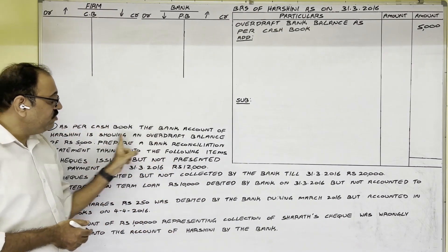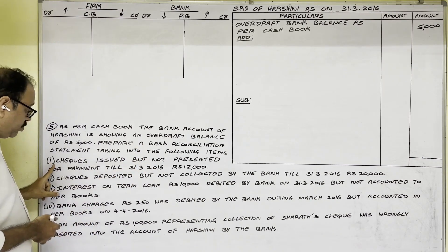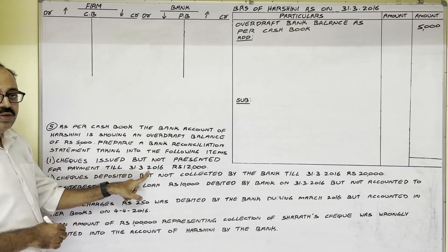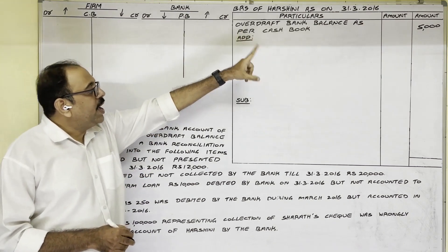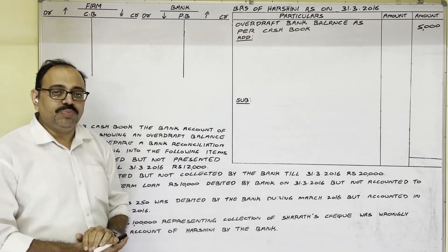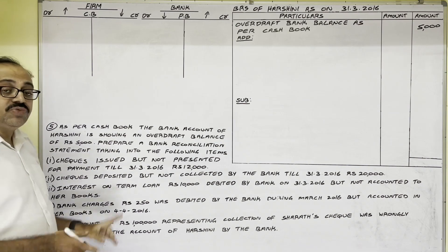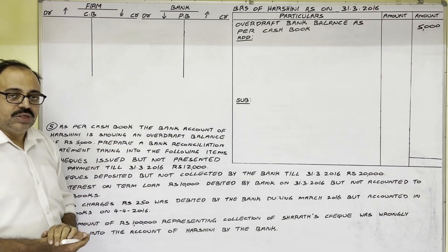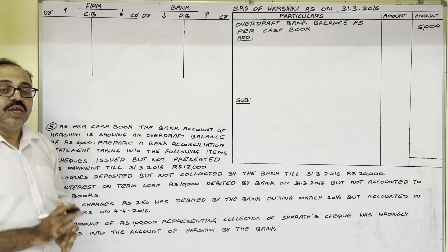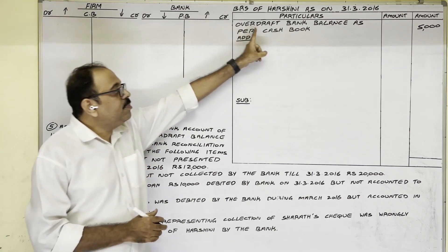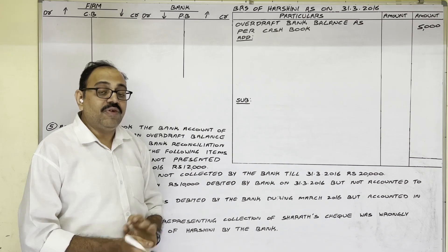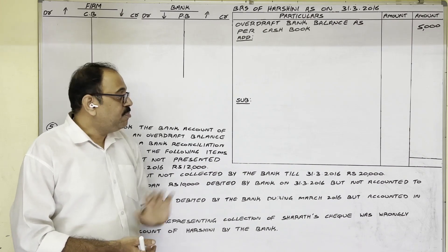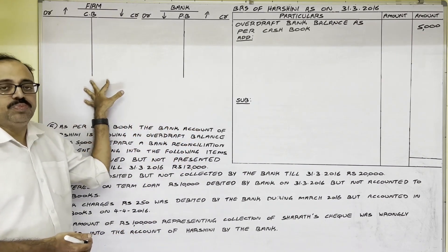The date is given in the first point. Overdraft bank balance as per cash book is 5000 rupees in the outer column. The remaining items are reasons for disagreement. Some reasons we should add to that amount and some we should subtract. Even though overdraft bank balance as per cash book is given, our assumption is that favorable bank balance as per passbook is given, meaning the passbook should be adjusted as per the cash book.